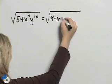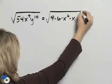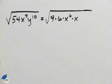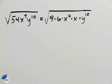x to the 7th can be written as x to the 6th times x. x to the 6th is a perfect square, and then y to the 10th itself is also a perfect square.